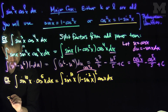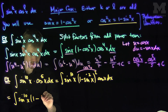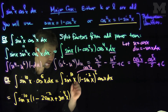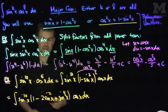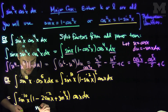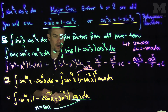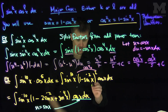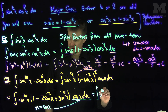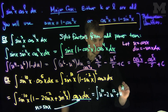By expanding the algebra, this is equal to the integral of sine to the tenth of x times (1 minus twice sine squared of x plus sine to the fourth of x) times cosine of x dx. Now if we let u equal sine of x, then du equals cosine of x dx. With this u-substitution, this becomes the integral of u to the tenth minus two u to the twelfth plus u to the fourteenth du.